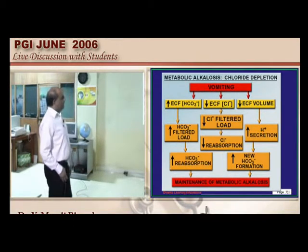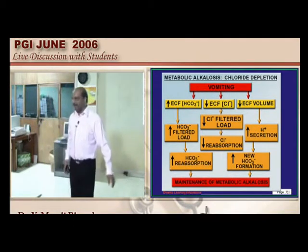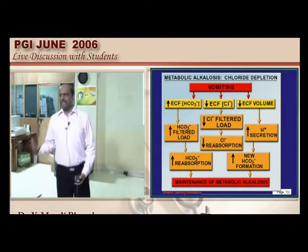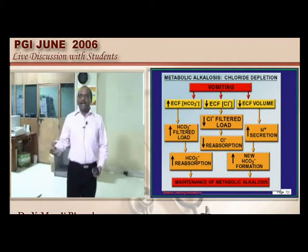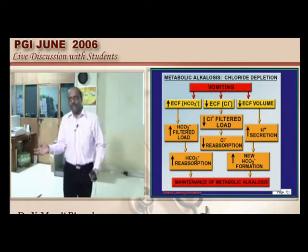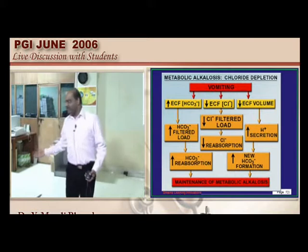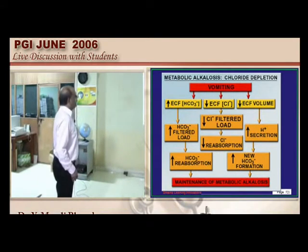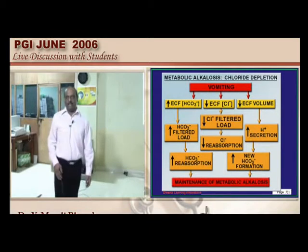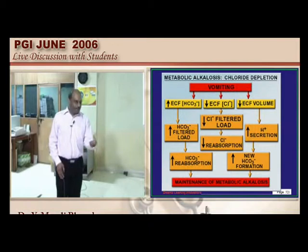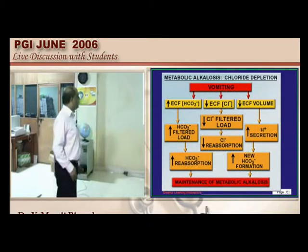A second pathway for metabolic alkalosis is Conn's syndrome, where excess aldosterone causes the same effect. Primary or secondary hyperaldosteronism can occur. With severe vomiting or furosemide therapy, chloride is lost into urine and the patient becomes dehydrated; giving saline treats the metabolic alkalosis.